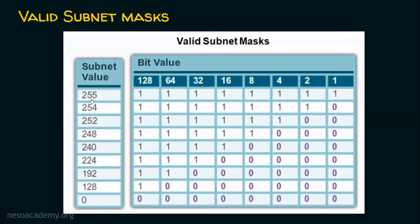A subnet mask has four octets, just like an IP address. For a class A subnet mask it is 255.0.0.0, for class B it is 255.255.0.0, and for class C it is 255.255.255.0. In classless addressing, we create our own subnet mask based on our specific needs and requirements.